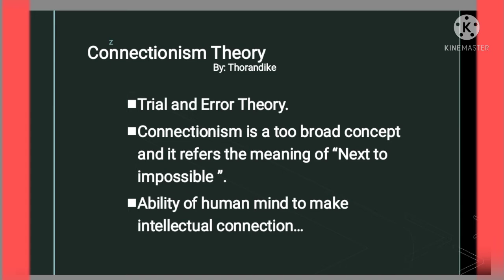Thorndike gave his theory the name of connectionism theory. This theory is also known as the trial and error theory, because as you have seen, the cat was making a lot of trials and also making some errors, because of which it was not able to come out. That is why Thorndike also gave it the name of trial and error theory. Connectionism is a broad concept.